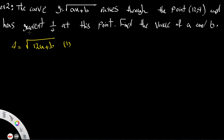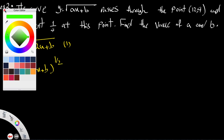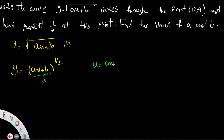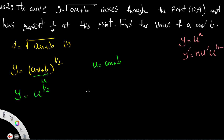Since the gradient is 1/4, differentiate y equals (ax plus b) to the power of half. Let u be ax plus b, so u prime equals a. Applying the chain rule: y prime equals 1/2 times u prime times u to the power of negative half, which simplifies to a over 2 times root(ax plus b).